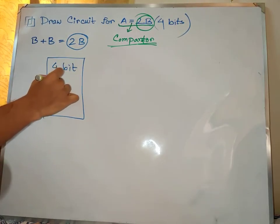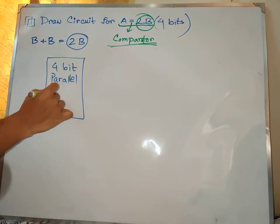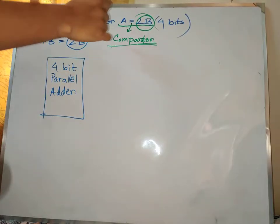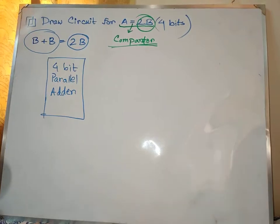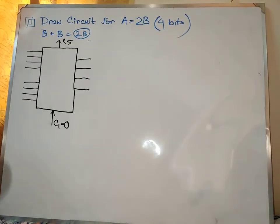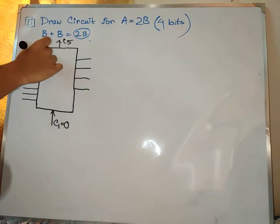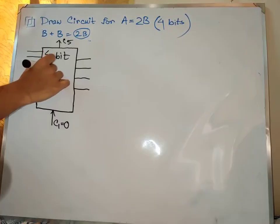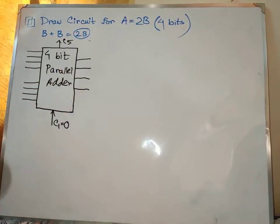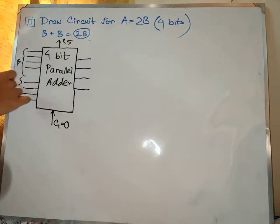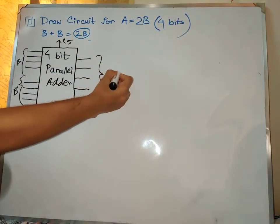We need to use a 4-bit parallel adder. The 4-bit parallel adder uses two inputs. The two inputs will be b and b. I will give b values as input, and I will give the output to this result, which will basically be 2b.